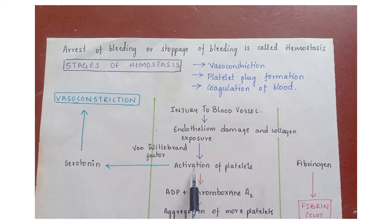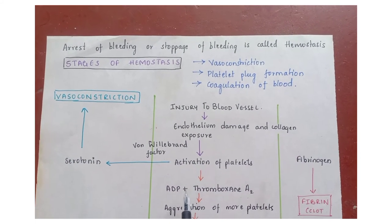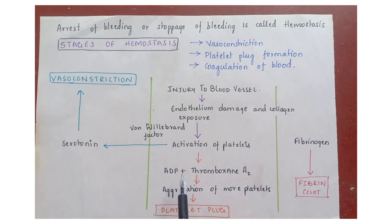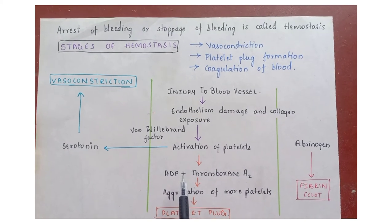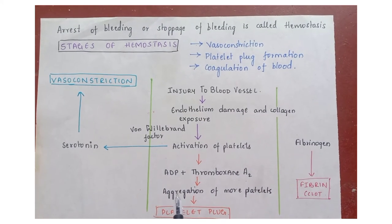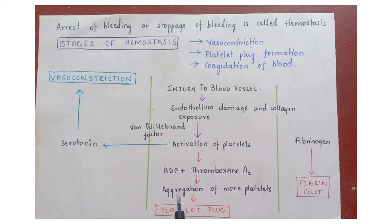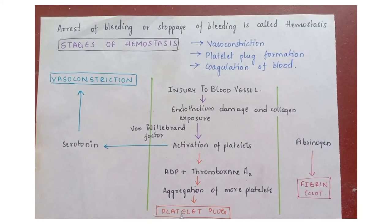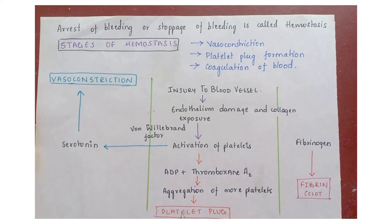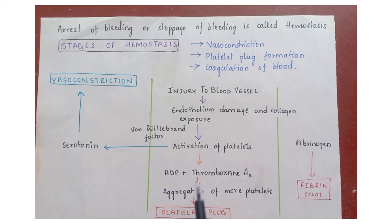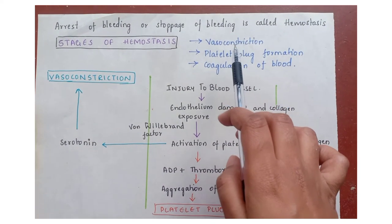These activated platelets also secrete ADP and thromboxane A2, which in turn attracts more platelets, causing platelet plug formation.